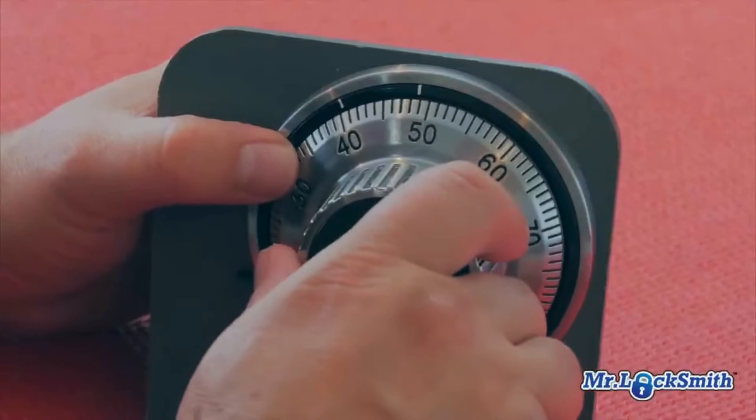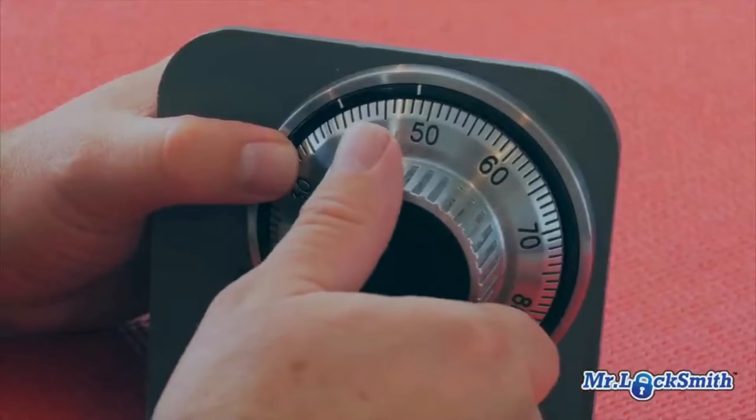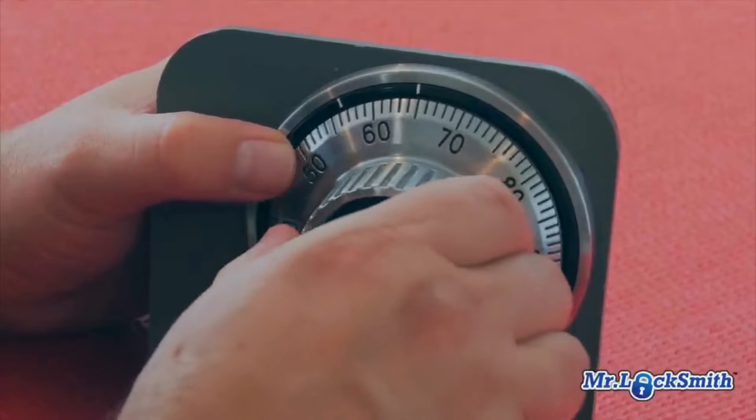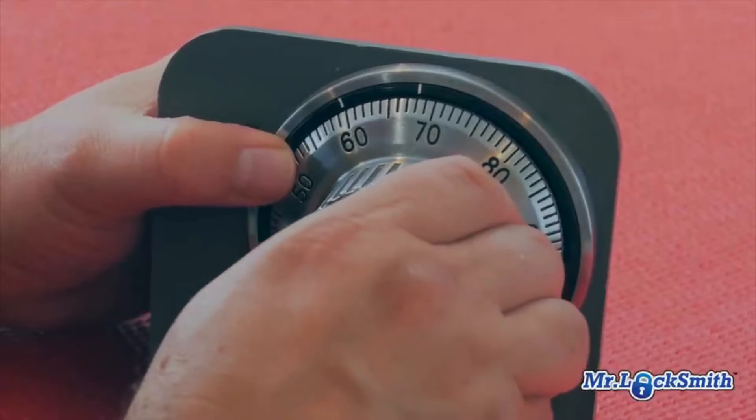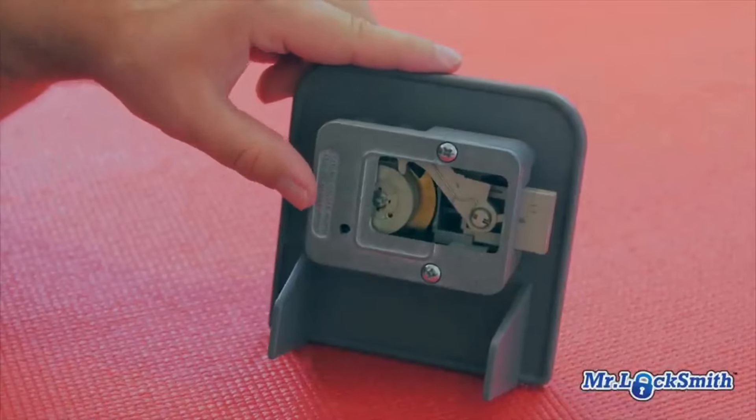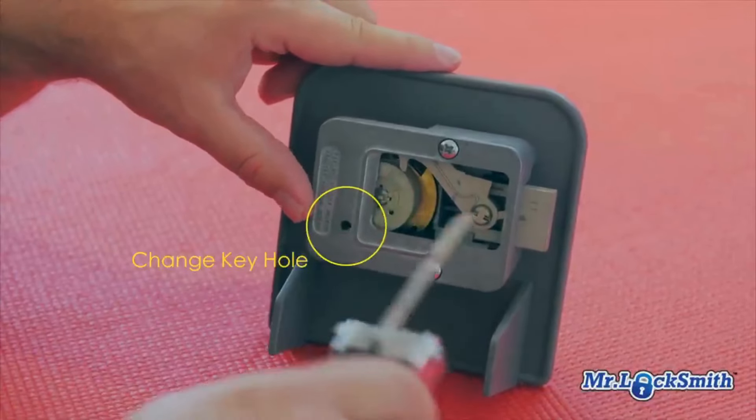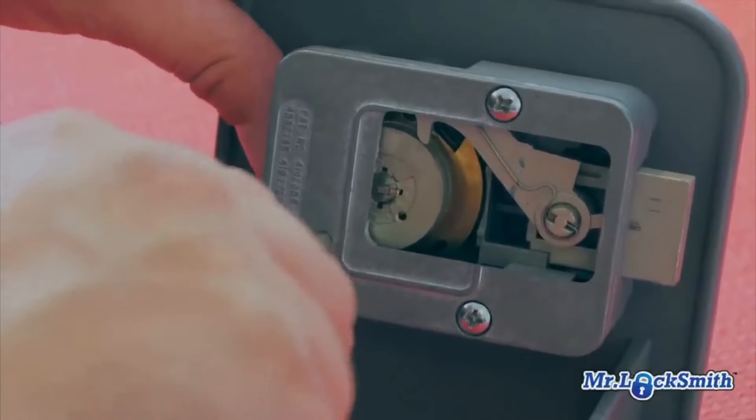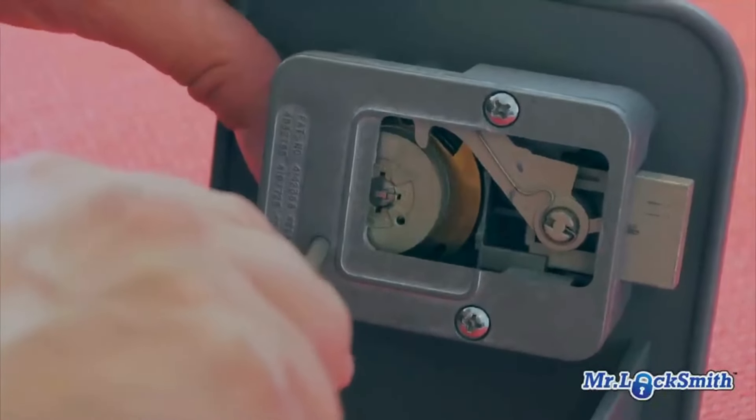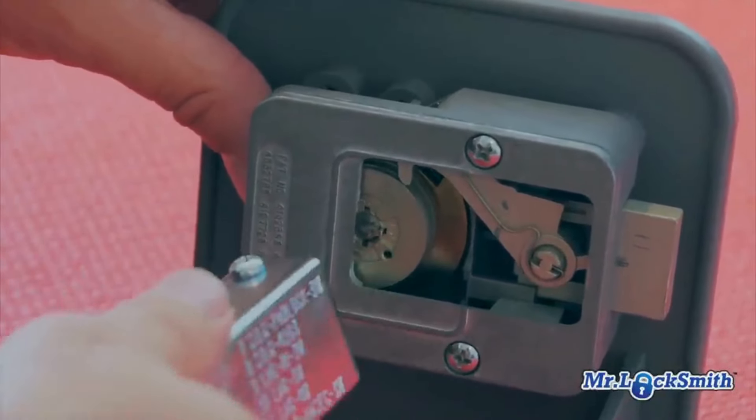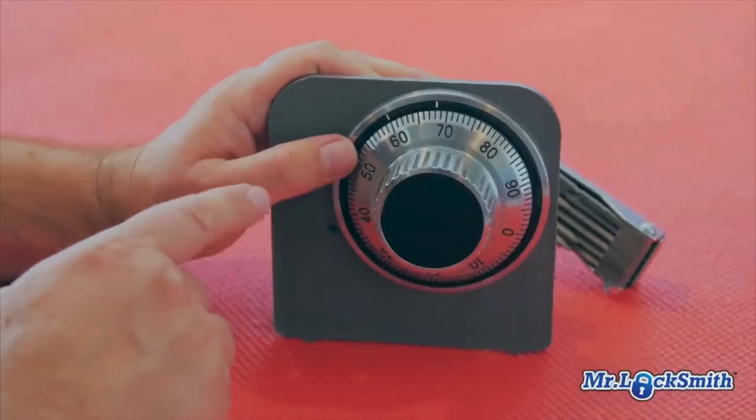Then our next number, 60, we're going to pass it once. We're going to stop when we hit 60. Now we're not doing right to open. Then we're going to take our change key, put the change key in there, turn it to the right till she stops. And never, never force these.